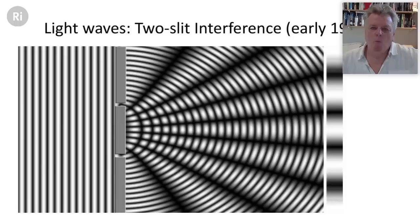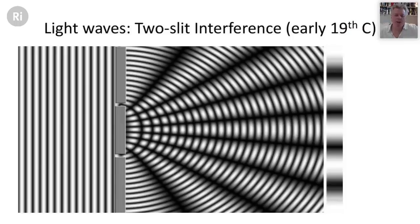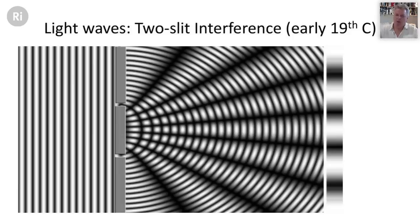One of the most notable things about waves is that they can undergo diffraction and interference phenomena. Imagine a series of wave fronts coming in from the sea, colliding with a harbor wall that has two gaps in it. As the waves squeeze through the gaps they spread out, acting as new sources of waves. Because these waves spread out at the same time, they overlap and run into each other, producing a phenomenon known as interference.